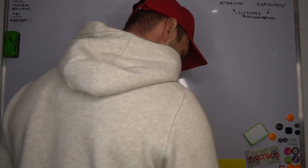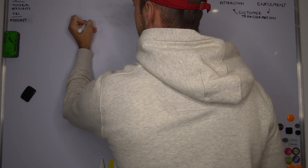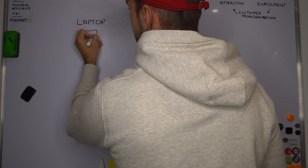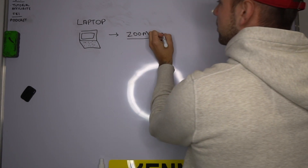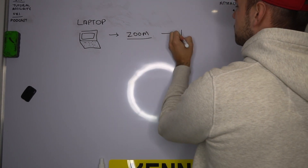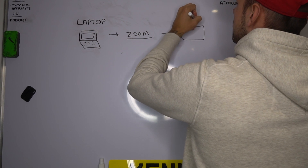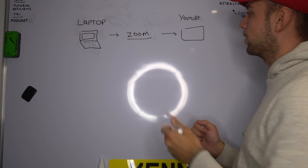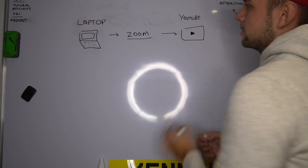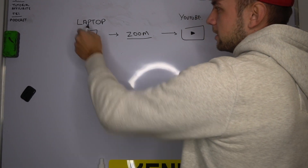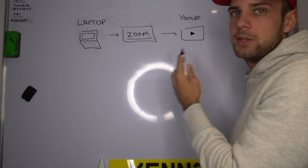There's going to be a couple of things you're going to need. The first thing you're going to need is a laptop. The second thing you're going to need is Zoom. And the third thing you're going to need is somewhere to distribute the content. So we're just going to use YouTube for now, but you can distribute the content wherever you want.